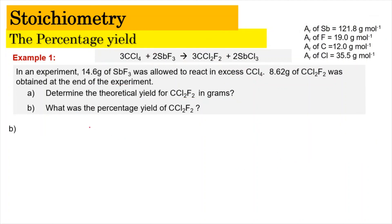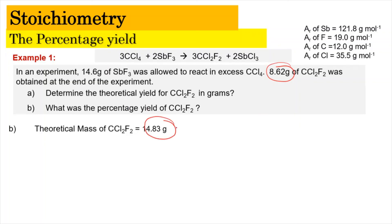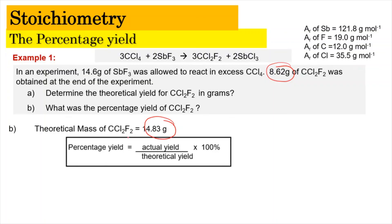For question B, what is the percentage yield of CCl2F2? We compare the actual yield of 8.62 grams with the theoretical yield of 14.83 grams. Percentage yield = (8.62 / 14.83) × 100% = 58.13%. That is how you calculate the percentage yield. I think that's all for today's video — see you again some other time. Bye!